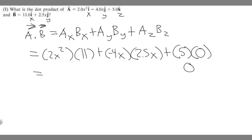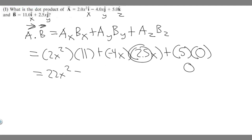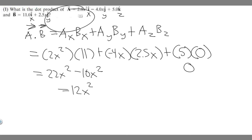So it's going to be equal to — you just multiply it out. Two times 11 is 22, so this becomes 22x squared. Then minus 4 times 2.5 is 10, and we have x times x, so this becomes minus 10x squared. So 22x squared minus 10x squared is 12x squared. Your answer — the dot product of these two vectors — is equal to 12x squared.